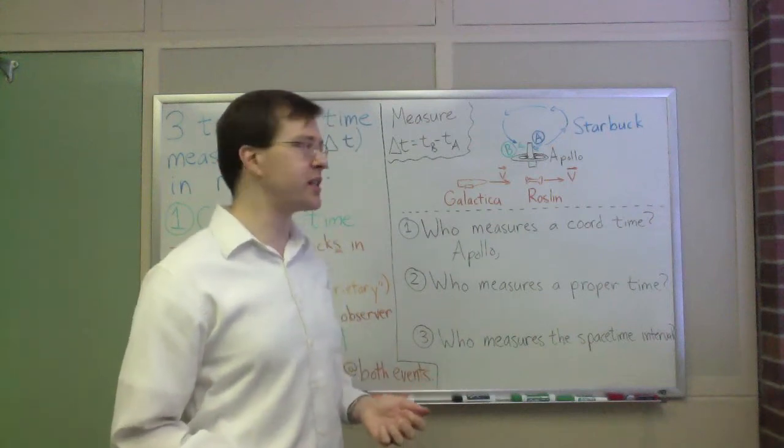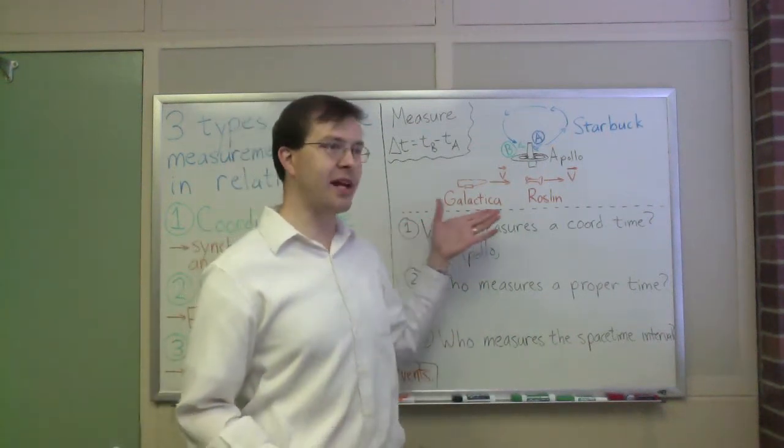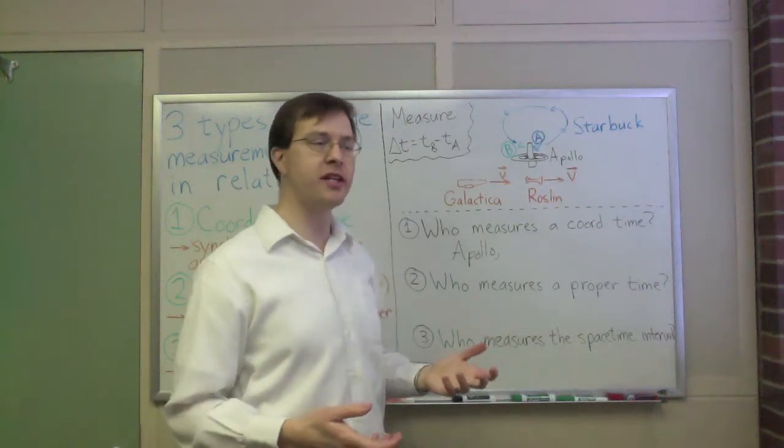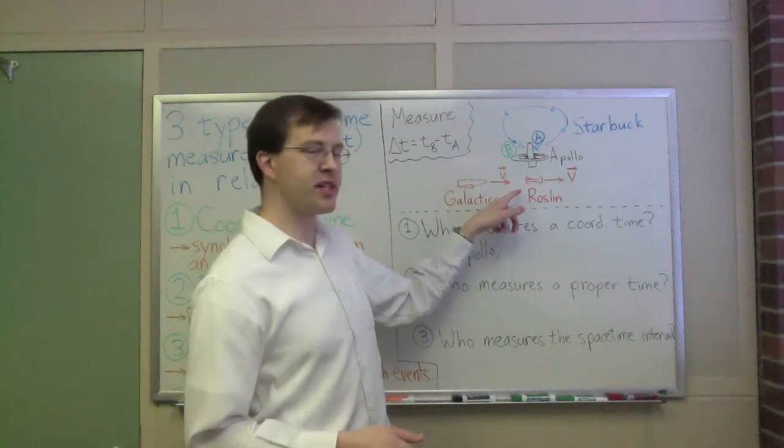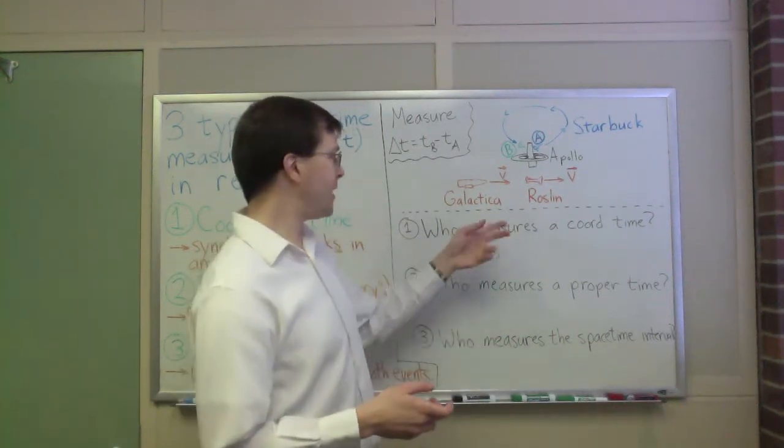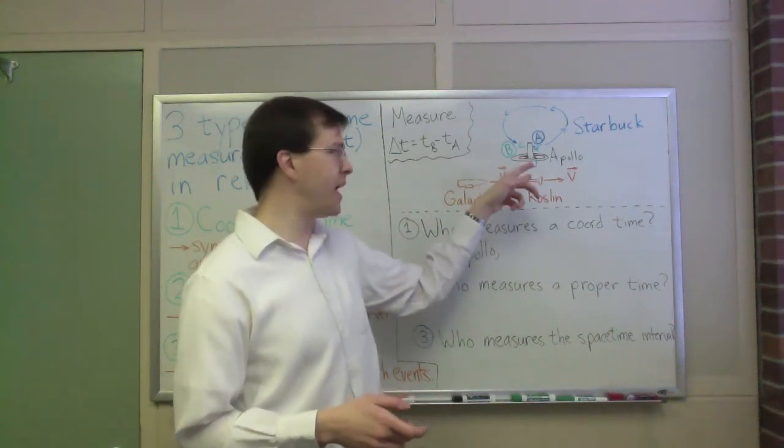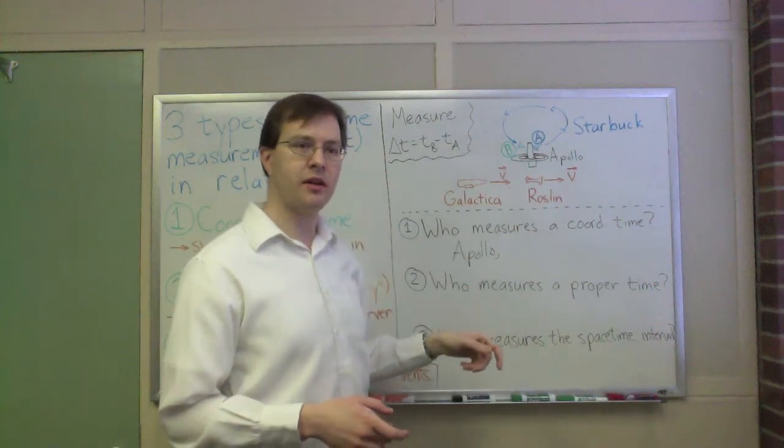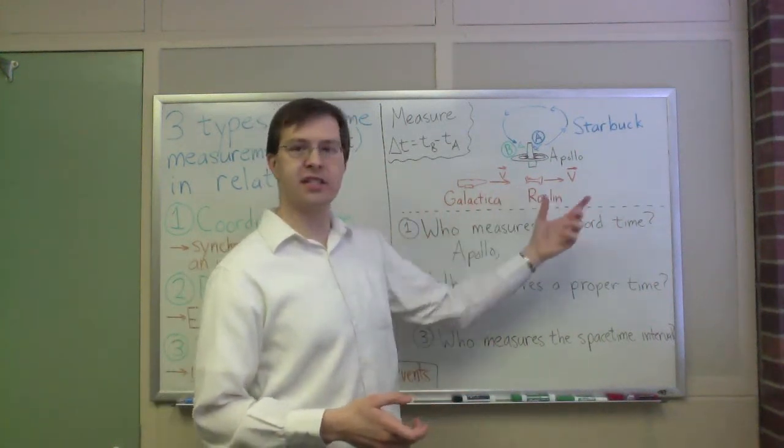To find another measurement of coordinate time between event A and B in this story, we can turn to the ragtag band of colonial refugees, and we can say, hey look, at event A, President Roslin is right there to note down the time on her synchronized clock, and she'll note down that time as she passes by the space station as Starbuck leaves. That'll be time A for the fleet's reference frame.